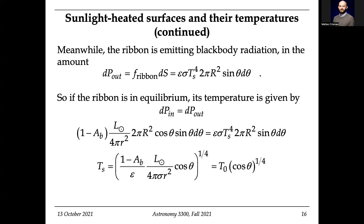If it's in equilibrium, I can set both of those powers equal to each other. There are a lot of shared terms — the r's cancel, the sines cancel — and what I really want is T_s. That T_s doesn't even depend on theta. So T_0 is the temperature right at the sub-solar point, and then it decreases as cosine to the one-quarter power as you go toward the poles.